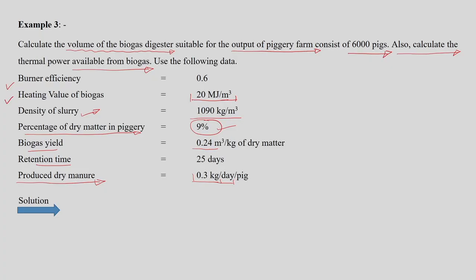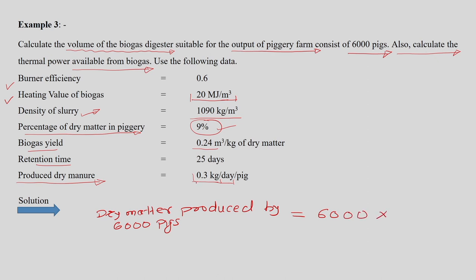First, we calculate the dry matter produced. We know the number of pigs and we know the dry matter in the manure is around 0.3 kg per day per head. Multiplying the number of pigs by the dry manure produced per day per head, we get approximately 1800 kg per day. This is the dry matter produced from the particular farm.